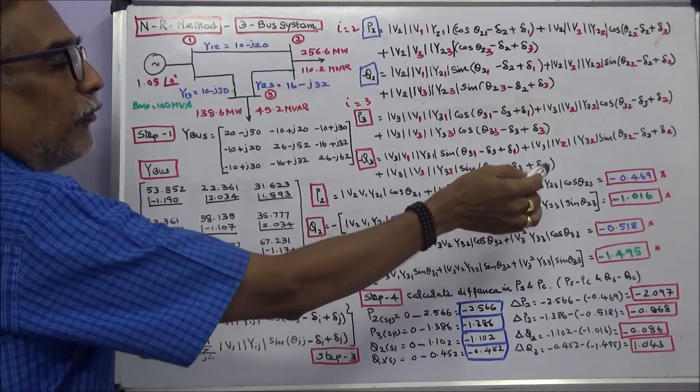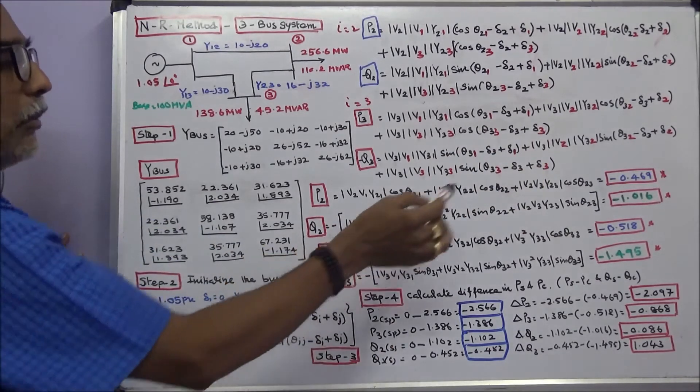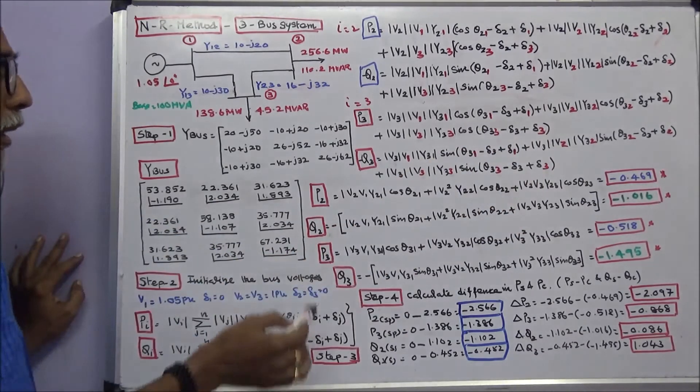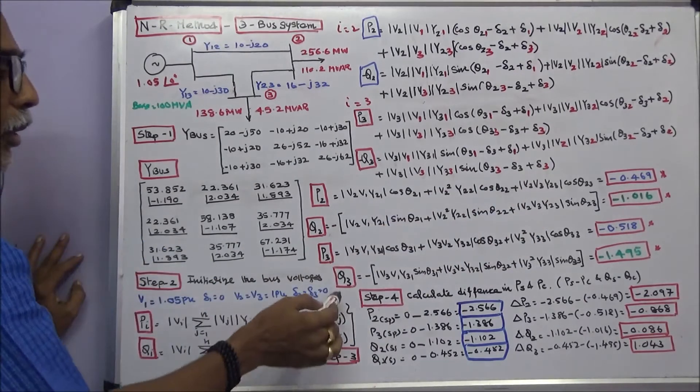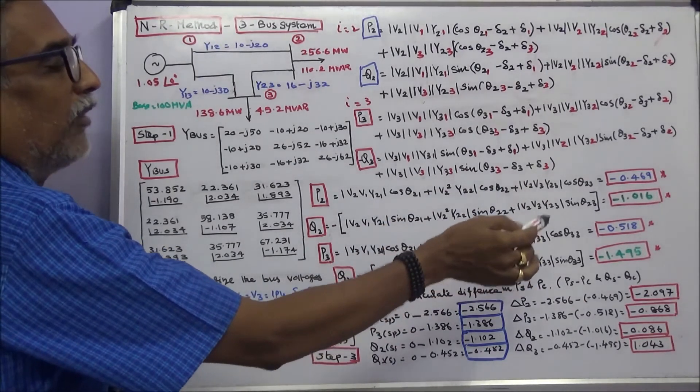P2 is equal to minus 0.469. Q2 is equal to minus 1.016. P3 is equal to minus 0.518. Q3 is equal to minus 1.495.